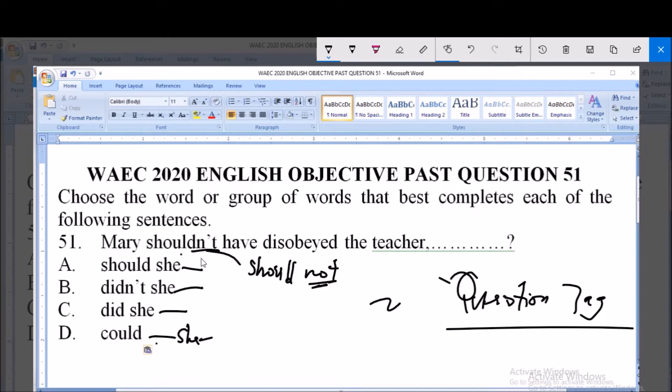Should she? No. Didn't she? No, because it's negative. But we don't need this modal verb in this question. Did she? Could she cannot work because this is also another modal auxiliary verb.